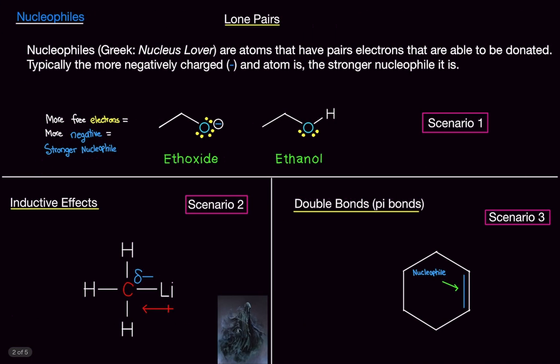There are three methods for determining where nucleophiles are on a molecule: lone pairs, inductive effects, and double bonds. Let's do lone pairs first. 'Nucleophile' literally translates to 'nucleus lover' in Greek. Nucleophiles are atoms that have pairs of electrons able to be donated — those electrons are the ones doing the attacking. Typically, the more negatively charged an atom is, the stronger a nucleophile it will be.